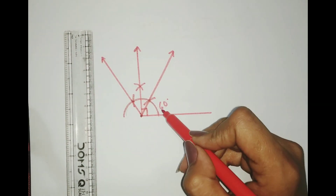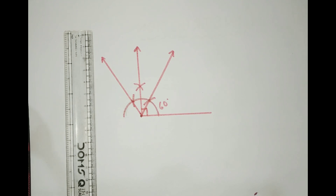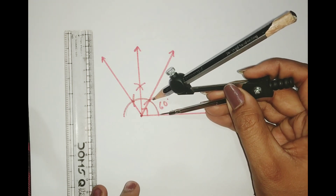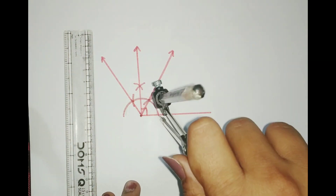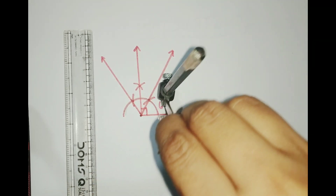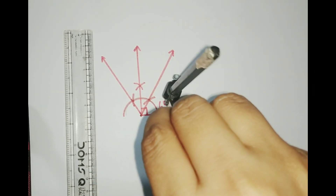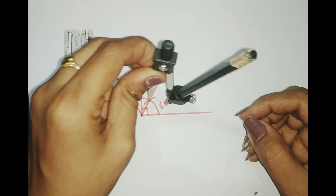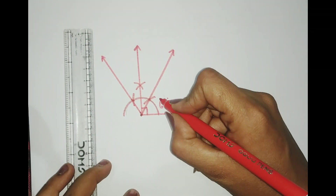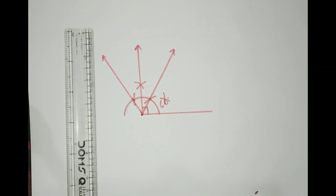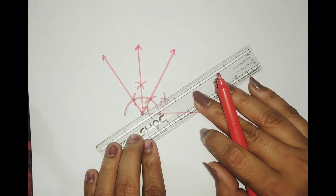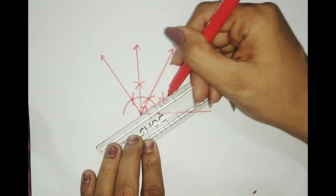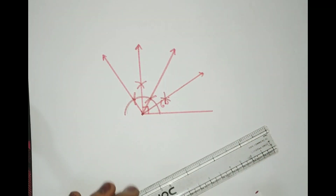Because I have 60 degrees, I can easily make 30 degrees as well. What do I have to do? I just keep my compass here and cut an arc over here, then keep the compass over here and cut it again. This gives us 30 degrees — I've drawn something from the midpoint of 60 degrees, and half of 60 degrees is of course 30 degrees. Very simple!